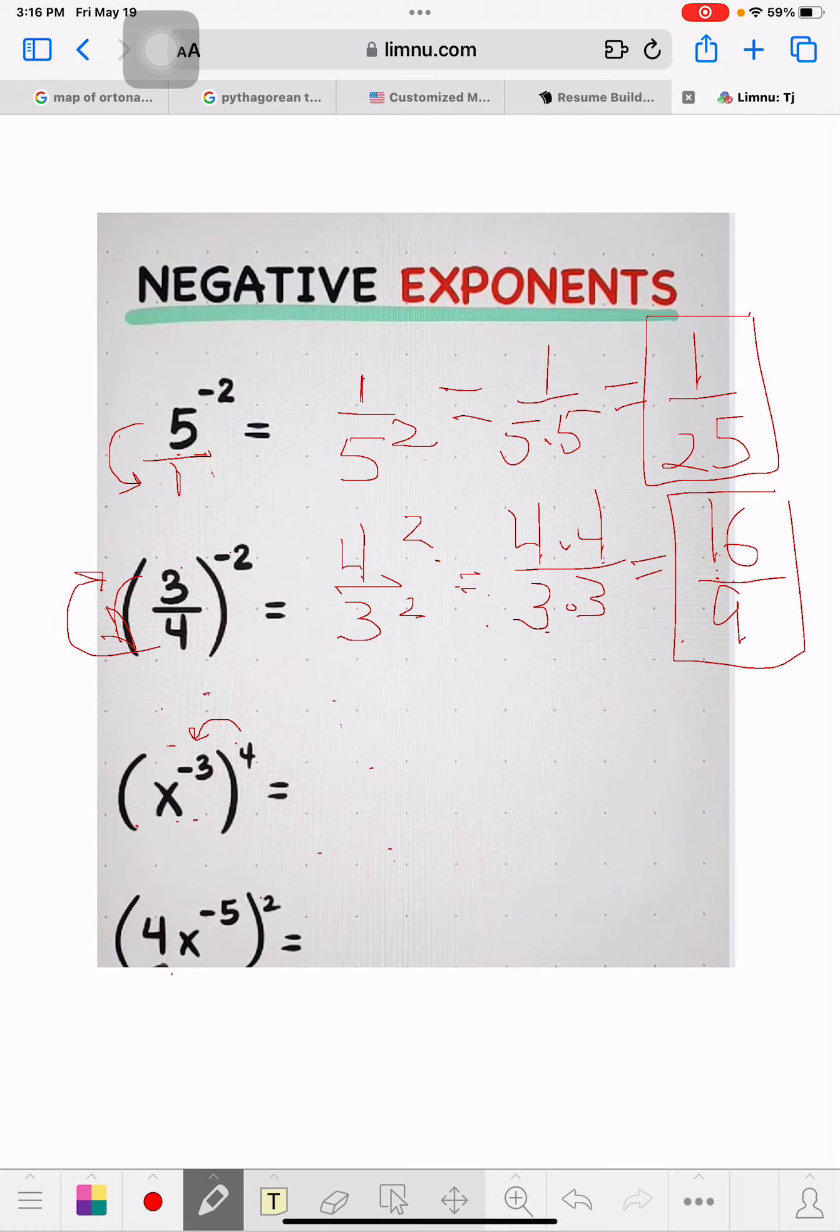I'm just going to put a little dot for the times instead of an x. I hate the x's. So what we're going to have now, this really can be written over 1, so it's going to be x to the negative 12th over 1.